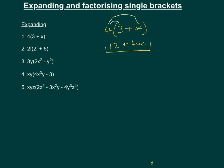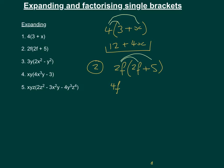For number 2, we've got 2f outside of (2f + 5). We expand by multiplying both terms inside by the term outside. So 2f times 2f is 4f squared, and 2f times 5 is 10f, giving us 4f² + 10f.